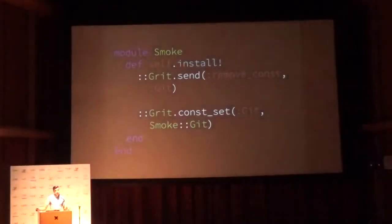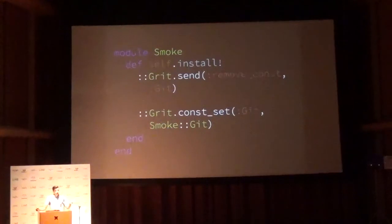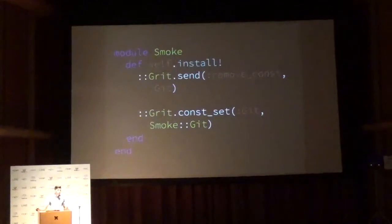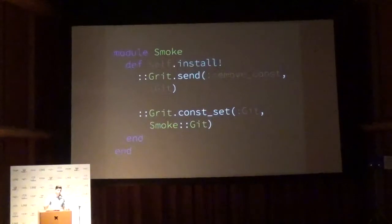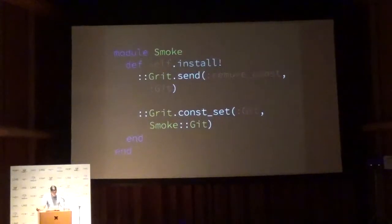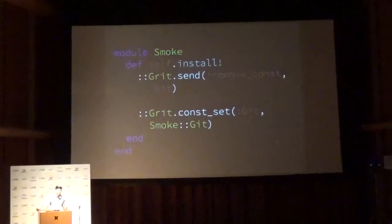This is another really important thing we did. Smoke makes these Grit calls happen over the wire, but completely transparently to the app. We literally replace the constants in the Ruby app between Grit and Smoke. So the application itself has no idea that anything's happening over the wire — we didn't have to rewrite anything to move to this new setup. This was super important because the app was literally crumbling underneath us a few years ago.